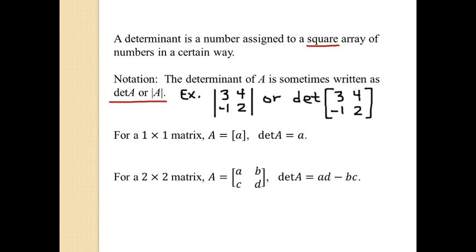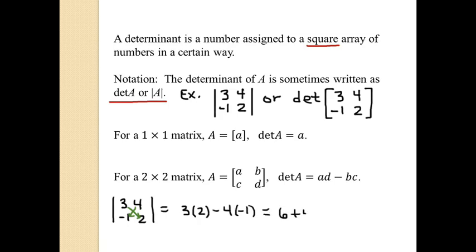For a 1 by 1 matrix with just one entry, the determinant is equal to that entry. For a 2 by 2 matrix — we talked about this a little bit when we were taking inverses, so you've already seen it — the determinant is AD minus BC. So for example, if we take the determinant of 3, 4, negative 1, 2, we cross the forwards diagonal minus the backwards diagonal: 3 times 2 minus 4 times negative 1, and we get 6 plus 4, which is 10.